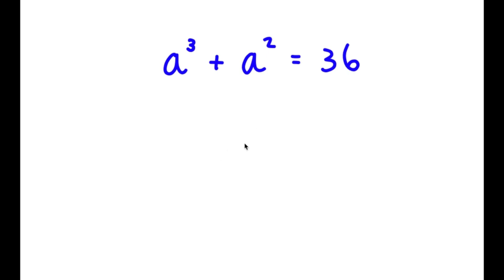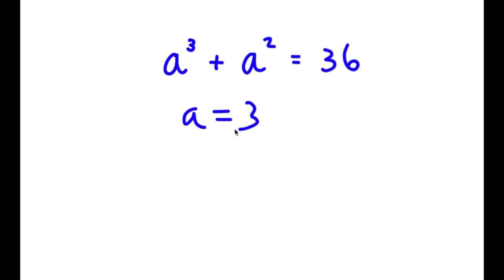In this problem, I have a to the power of 3 plus a squared equals 36. To find all solutions, I need to first find one solution by plugging in some numbers. If we plug in 1, we get 2 equals 36, which is wrong. If we plug in 2, we get 8 plus 4, which is 12, equals 36, which is wrong. If we plug in 3, we get 3 to the power of 3 which is 27, plus 3 squared which is 9, equals 36. So a equals 3 is one solution.